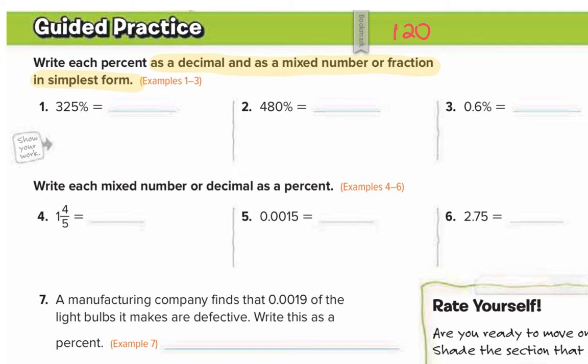We have 325 percent. We want to write this as a decimal and as a fraction. The shortcut we learned is to convert a decimal to a percent, you move the decimal two places to the right, and to convert a percent to a decimal, you move two places to the left.